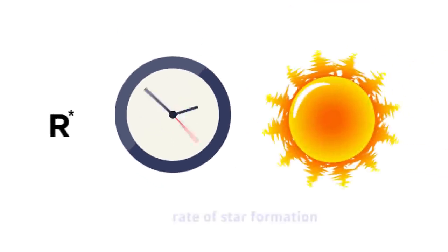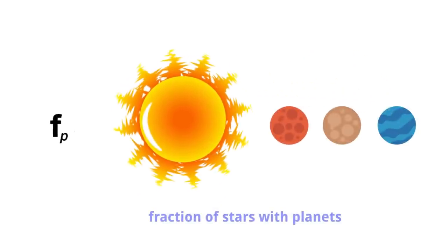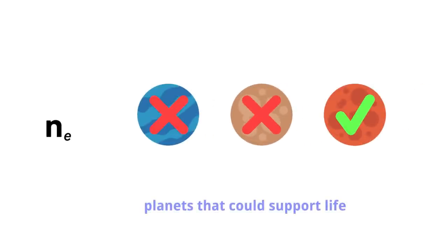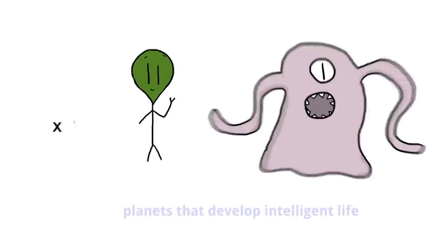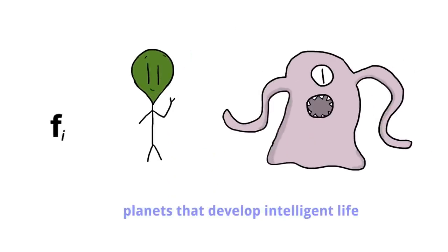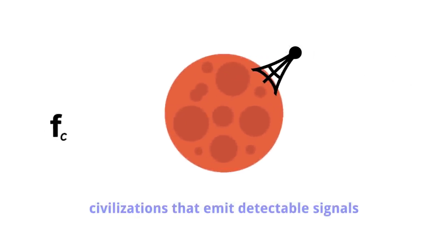Then we have the average rate of star formation in our galaxy, the fraction of those stars that have planets, the average number of planets that could potentially support life per star, the fraction of those planets that actually develop life, the fraction of those planets that go on to develop intelligent life, the fraction of civilizations that develop technology that releases detectable signs of their existence, and the length of time for which such civilizations release detectable signals.